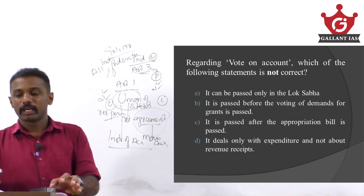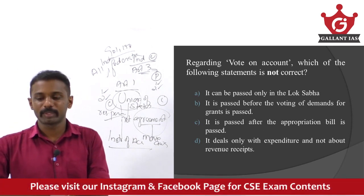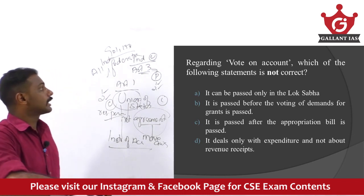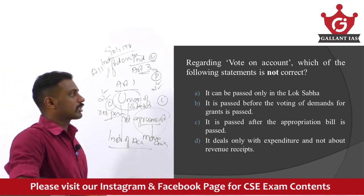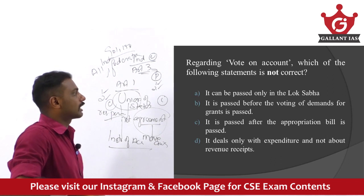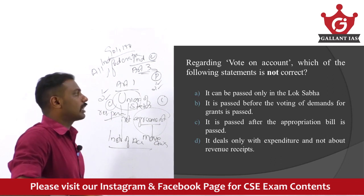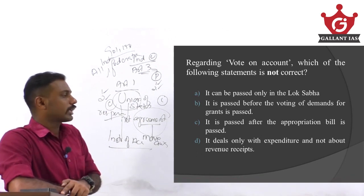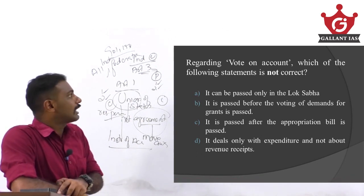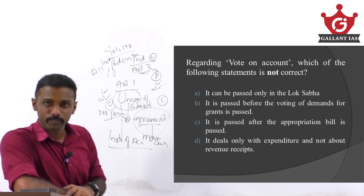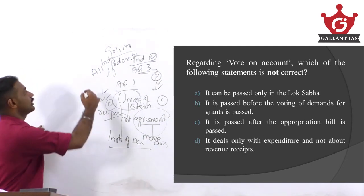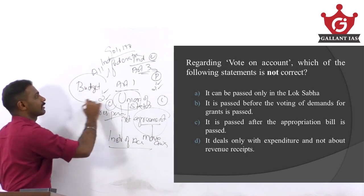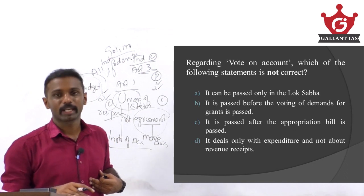Next question regarding vote on account: which of the following statements is not correct? Statement 1: it can be passed only in the Lok Sabha. Statement 2: it is passed before the voting on demands for grants is passed. Statement 3: it is passed after the appropriation bill is passed. Statement 4: it deals only with expenditure and not about revenue received. What is actually a vote on account? This is regarding the budget — during the budget passage there is a concept called vote on account.